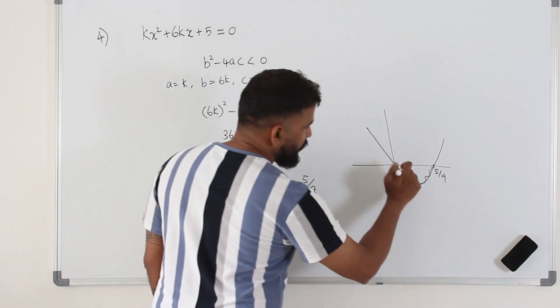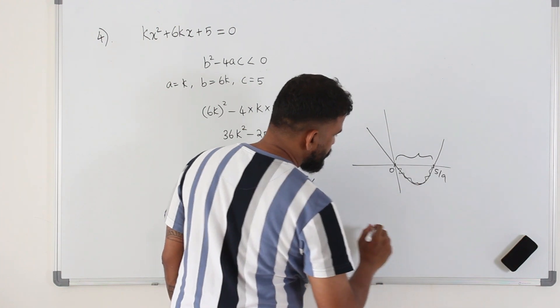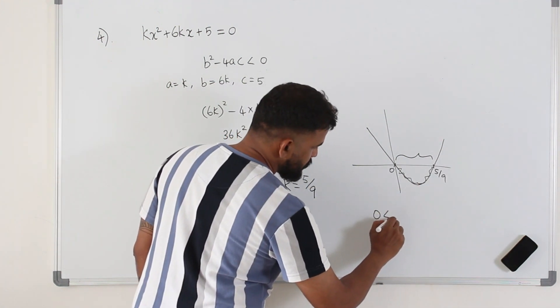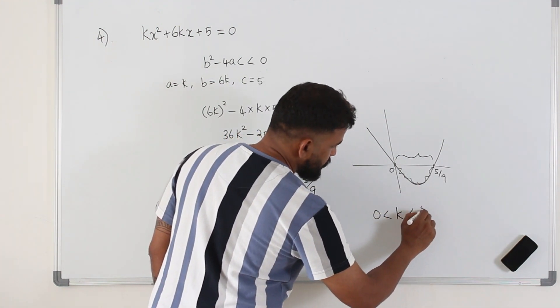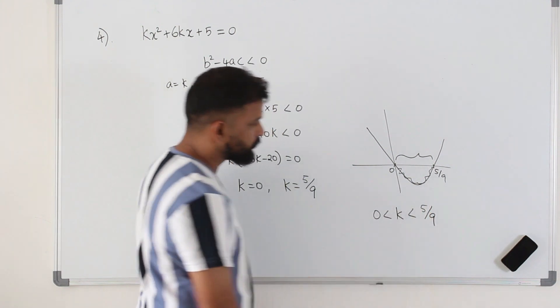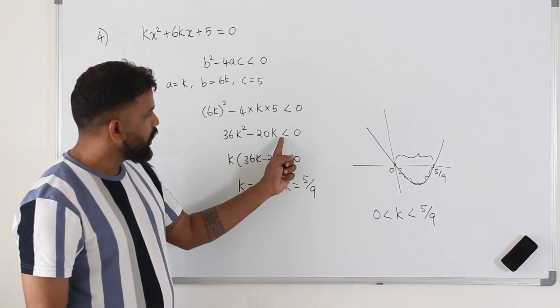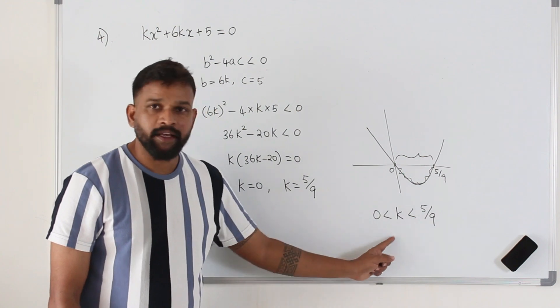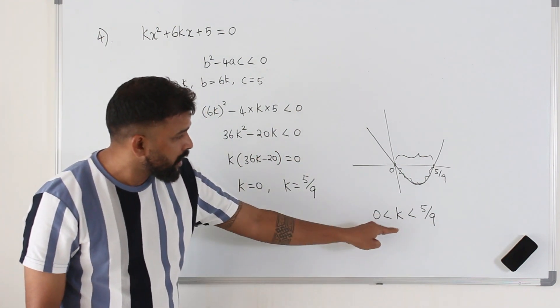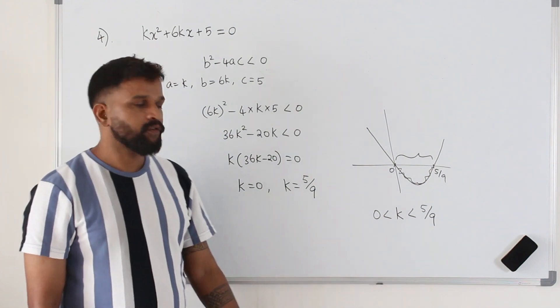So, 0 is less than k is less than 5 over 9. If there is an equal sign, you put equal sign here. But in this case, there is no equal sign. So that would be the range of possible values of k.